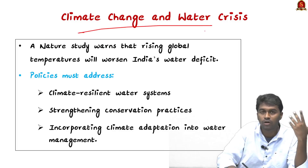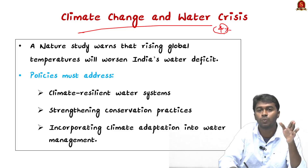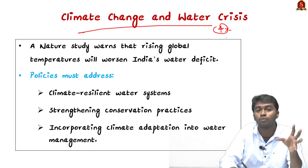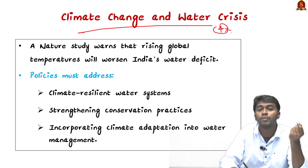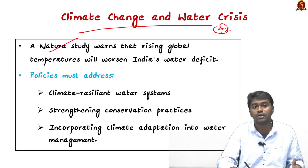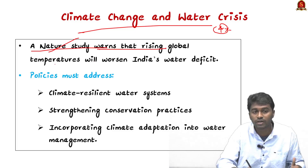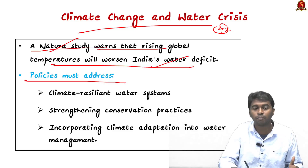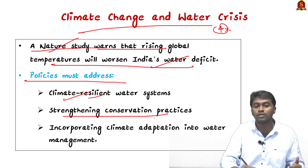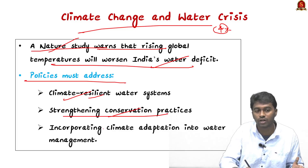Climate change worsens India's water crisis. India holds 18 percent of the global population but only 4 percent of freshwater. NITI Aayog projects water demand will be twice the supply in coming years. A study published in the journal Nature warns that rising global temperatures will worsen India's water deficiency. Therefore, future policies must address climate-resilient water systems, strengthening water conservation practices by combining indigenous knowledge with modern technologies.